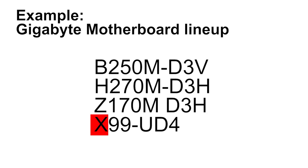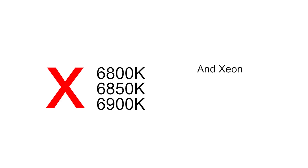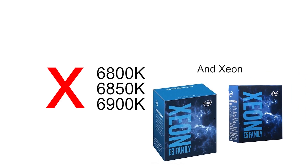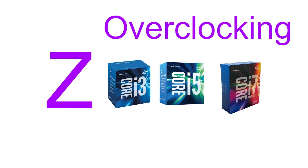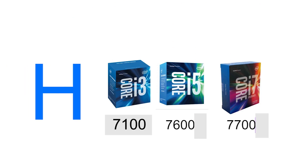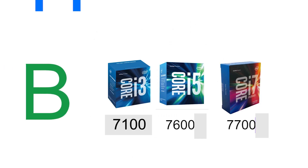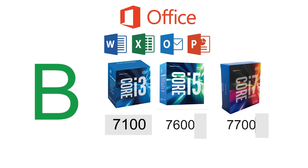Motherboards have prefixes: X, Z, H, and B. X is for enthusiasts and can only fit certain high-end processors. Z is for overclocking for an i3, i5, or i7 processor with a K in its name. H is basically Z but without the overclocking, for gaming purposes. B is basic — for office or school work.